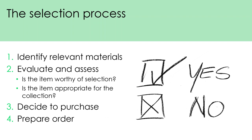The selection of resources for a collection can be considered a four-step process. First, we identify the relevant materials. Secondly, we evaluate and assess those materials to decide if they're worthy of inclusion. Next, we make the decision to purchase the item, and then we prepare an order so that the item can be purchased.